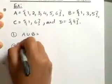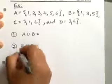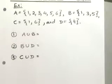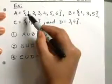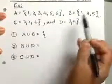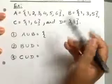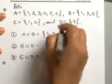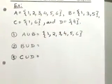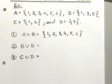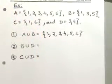We're trying to find the union of A and B. Union means you take the elements from both sets and put them all together. Set A has 1, 2, 3, 4, 5, 6 and set B has 1, 3, 5. Since 1, 3, and 5 are common to both sets, you don't write them twice — just once. So the union of A and B looks the same as set A.